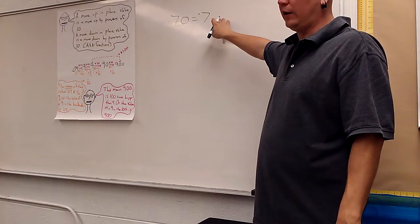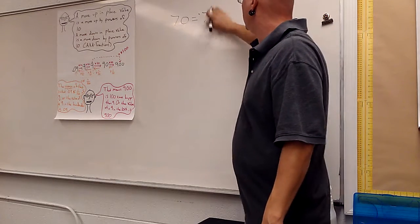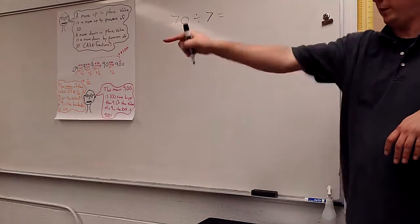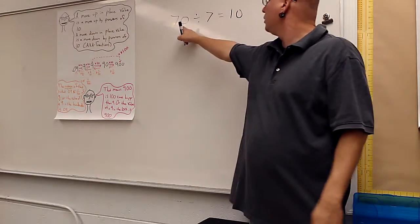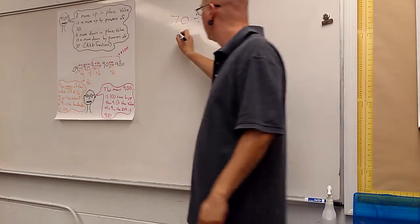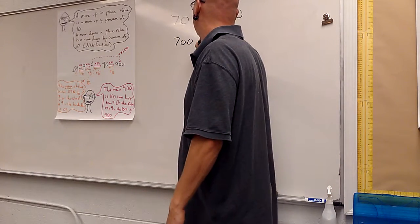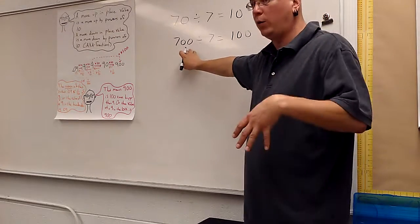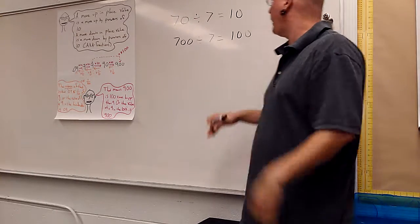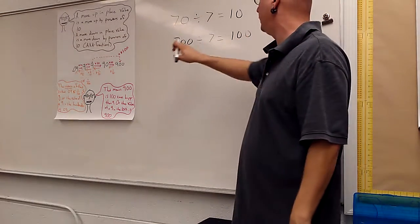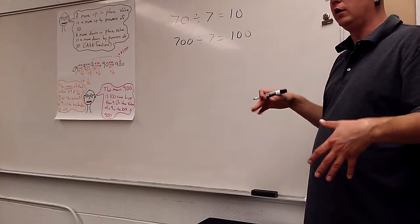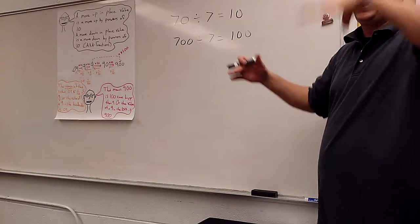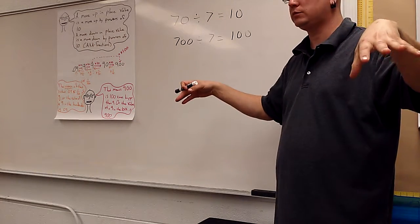7 equals 70 divided by what? 10, we move down one place value, correct? 100, two 0s, we move down two place values, correct? And our pattern is going to continue the exact same way. Every time we add 0 over here or place value over here, we're going to remove another place value, right? So when we're moving place values, what we're doing is taking factors of 10 away or adding factors of 10 by multiplying or dividing. With me so far?